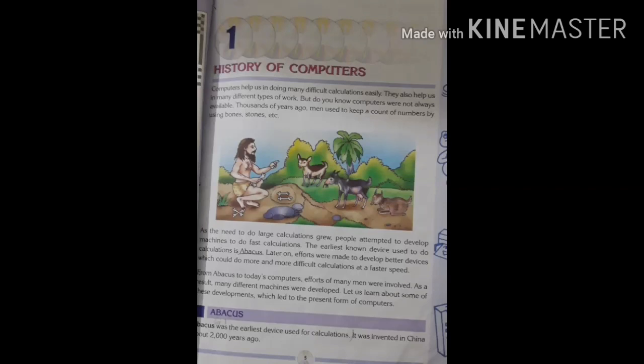Thousands of years ago, men used to keep a count of numbers by using bones, stones, etc. As the need to do large calculations grew, people attempted to develop machines to do fast calculations. The earliest known device used to do calculations is Abacus. Later on, efforts were made to develop better devices which could do more difficult calculations at a faster speed.